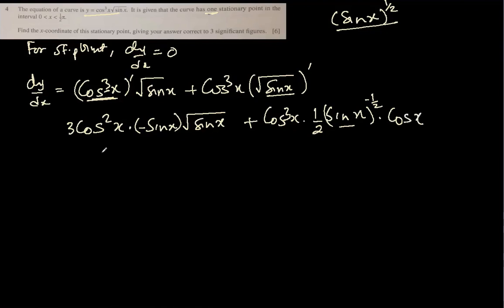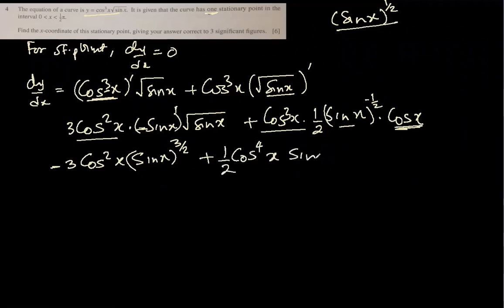Now we have a little complicated part here, but we can simplify this by taking something common. Let's simplify. 3 cos²x, and because of this negative I will put negative in front, and sin x to the power, this is 1 and this is 1/2, 1 plus 1/2 is 3/2. Plus cos⁴x, and half is in front, and sin x to the power minus 1/2. So I was saying that we can factor this. Let's take the smaller of the two common. Cos² comes as a common part. Sin to the power 3/2, sin to the power -1/2.